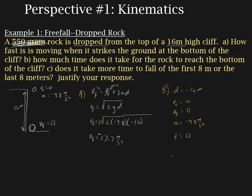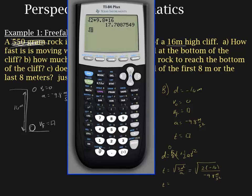We're going to use the position function: d equals V_initial times t plus one-half at squared. Since V_initial is zero, solving for t gives t equals the square root of 2d over a, which is the square root of 2 times negative 16 meters divided by negative 9.8 meters per second squared. The negatives cancel, giving us t equals 1.81 seconds.